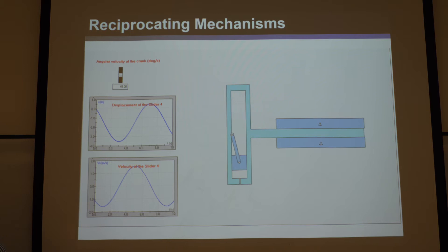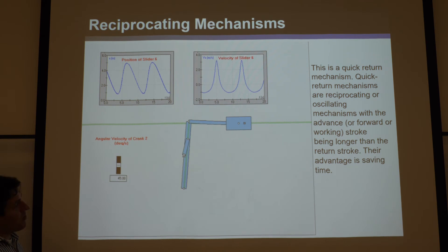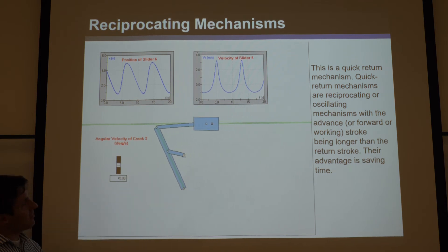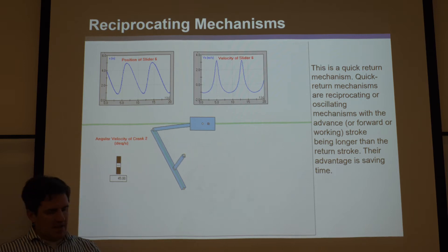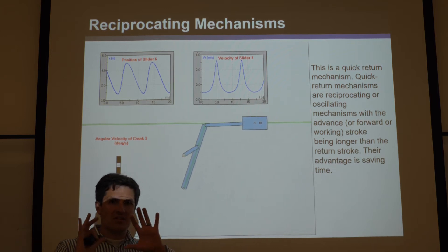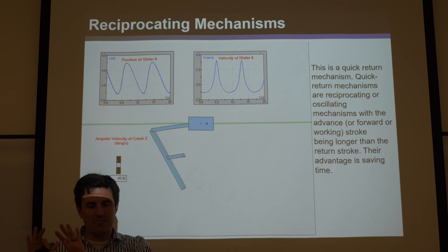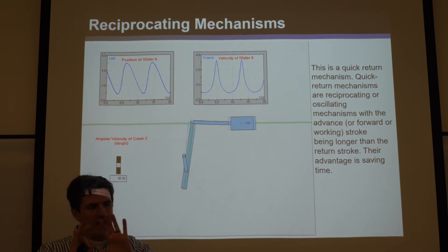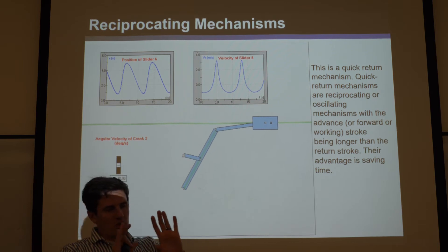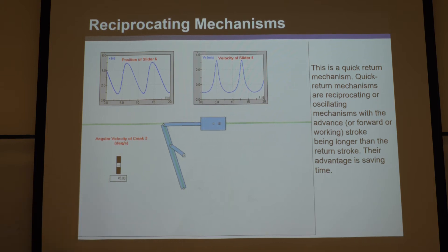Sometimes you don't want a pure sinusoidal output. A quick-return mechanism takes continuous rotation but produces a slow forward stroke — useful for doing work — and a fast return stroke to reset as quickly as possible. This avoids wasting time during the reset phase. The velocity and displacement profiles are offset rather than symmetric.